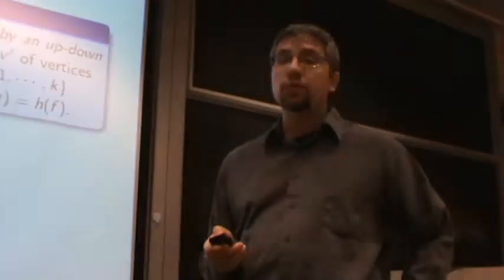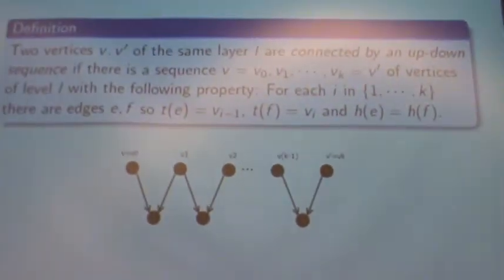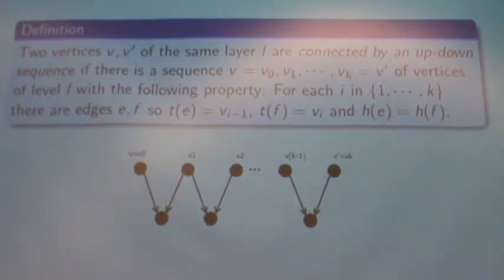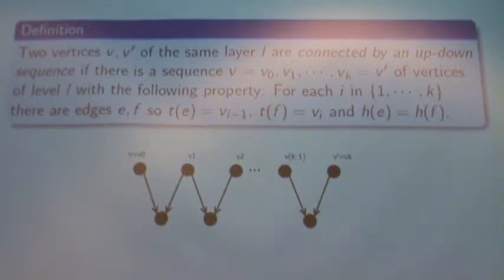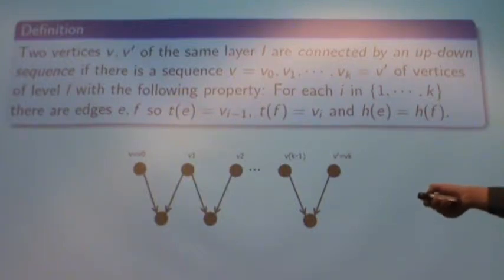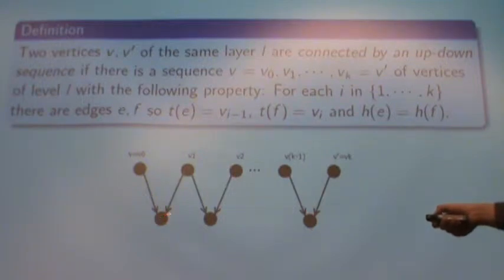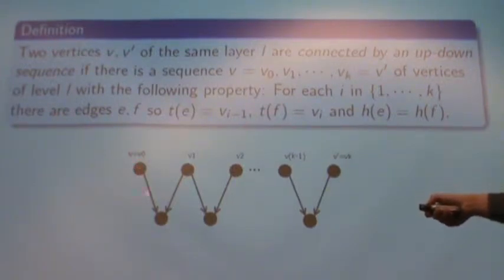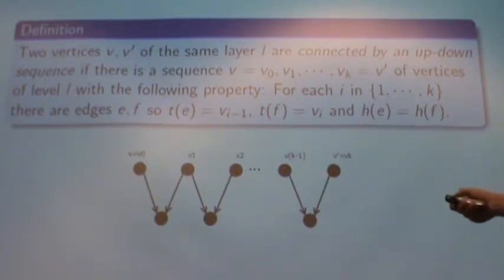Another graph theory definition we're going to need is that of an up-down sequence. Two vertices of the same layer L are going to be connected by an up-down sequence if there happens to be a sequence of vertices all of the same layer with the following property: given any two of these vertices in sequence, there are edges leaving them that happen to have a common head. It's called an up-down sequence — it probably should be called a down-up sequence — but you can go down, up, down, up, down, up, and get to the other one, and all of these have to be at the same level.